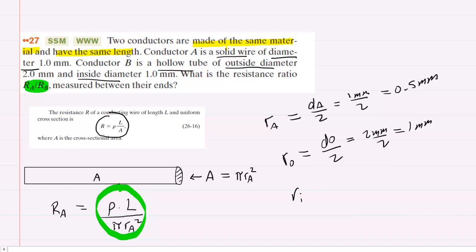And then finally, the inner radius of conductor B will be the inner diameter divided by 2. The inner diameter was 1 millimeter. Divide that by 2. You'll get half of a millimeter. So basically, the quantities are half a millimeter except for r sub O which is 1.